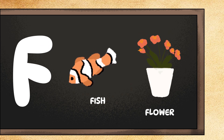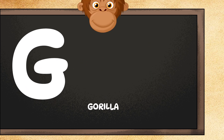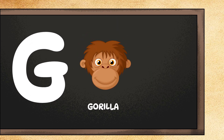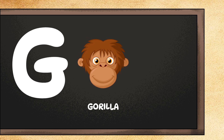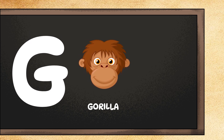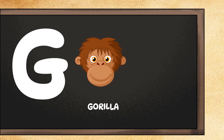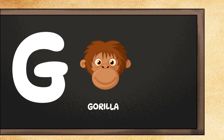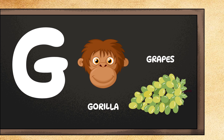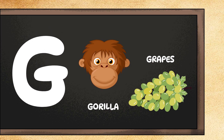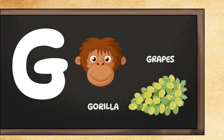Now let's move on to G. G is for gorilla. Can you pound your chest like a strong gorilla? Good one! G is also for grapes. Can you pretend to eat some grapes? Yum!